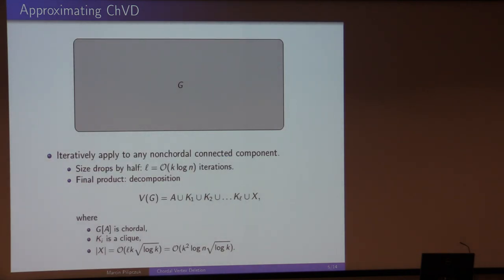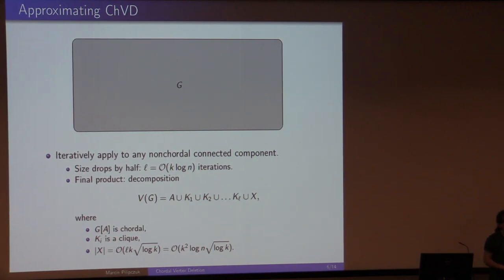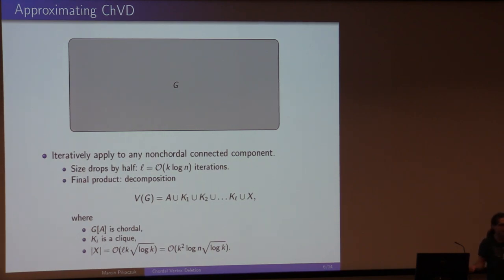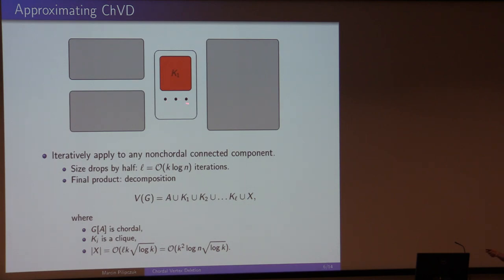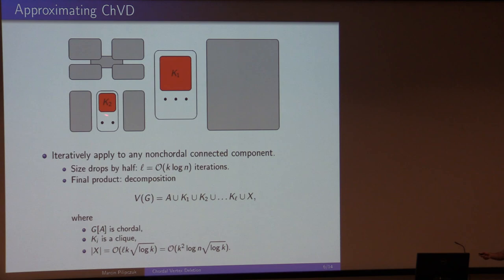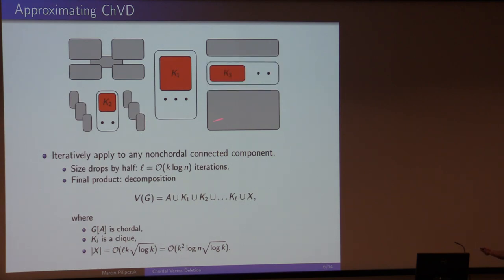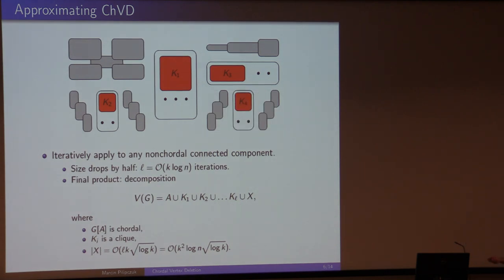So: given a graph that is a YES instance, we can find a separator that is a clique plus at most k√(log k) vertices. Let's do this iteratively. We have the entire graph; it's not chordal. We find the balanced separator — a clique and a few vertices — split into connected components, each shrunk by half. Some components may already be chordal; keep those aside. For the rest, apply the algorithm again: another clique plus a few vertices, until everything is chordal.